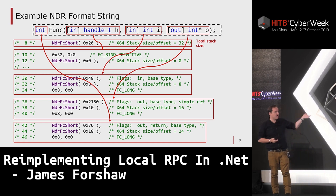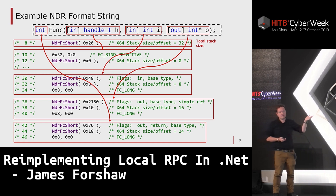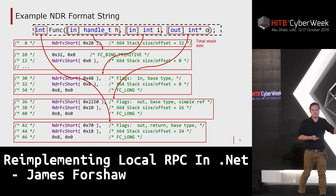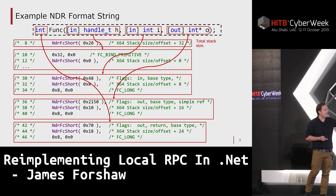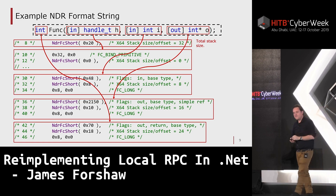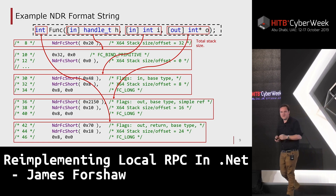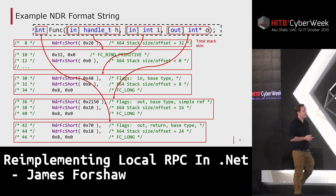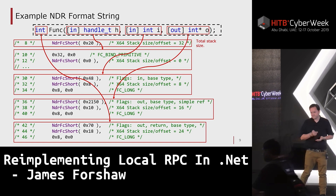These are instructions to the interpreter inside the RPC runtime to perform marshalling. It says: at stack offset 8 you'll find that integer, take it and package it up into the RPC protocol.